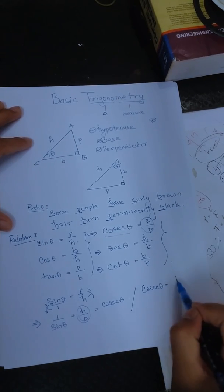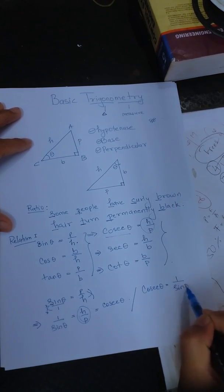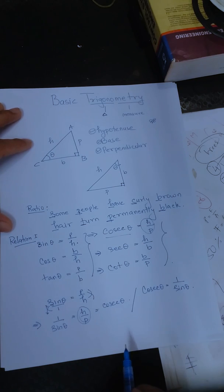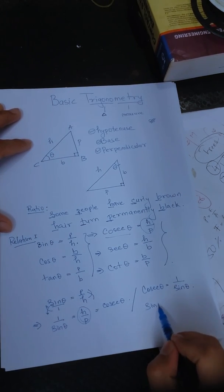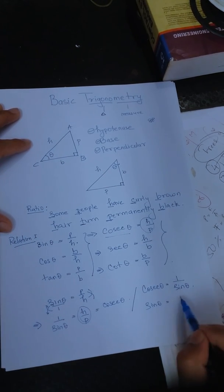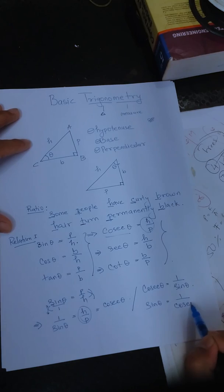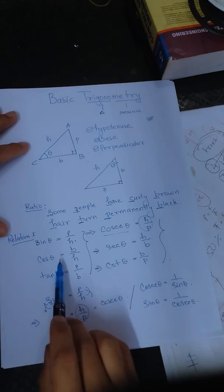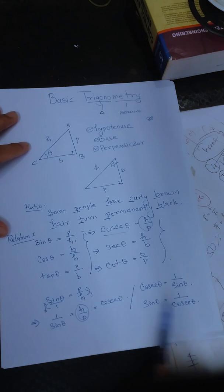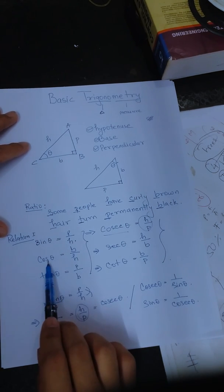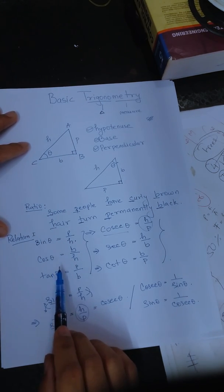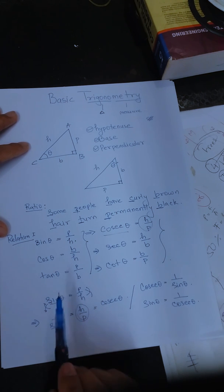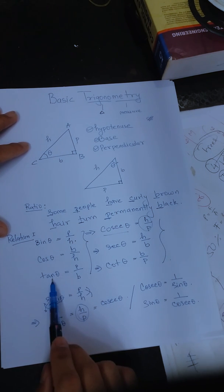1 by sine theta. 1 by cos theta. Cos 2 is 1 by cos theta. 1 by cos theta.